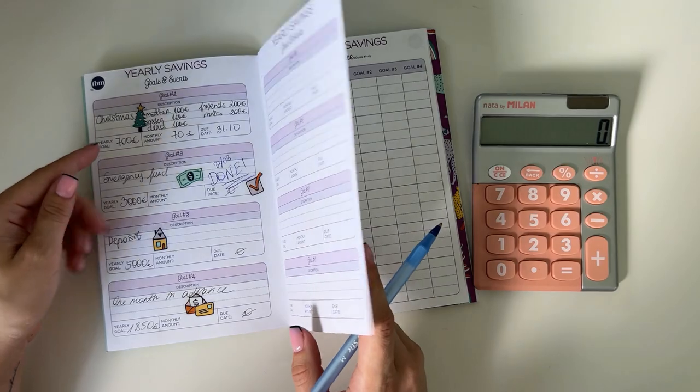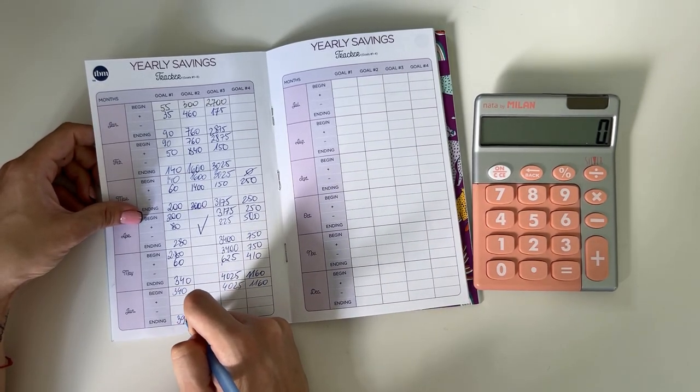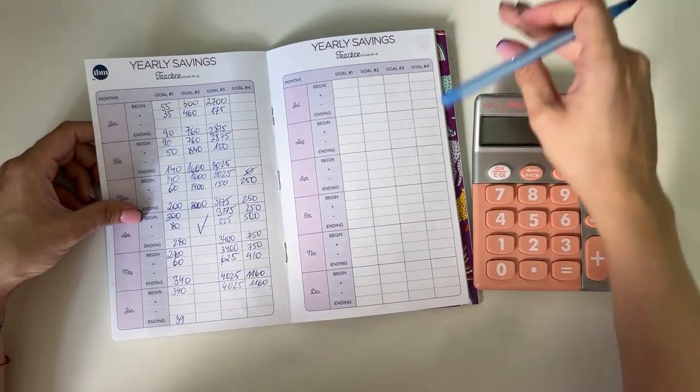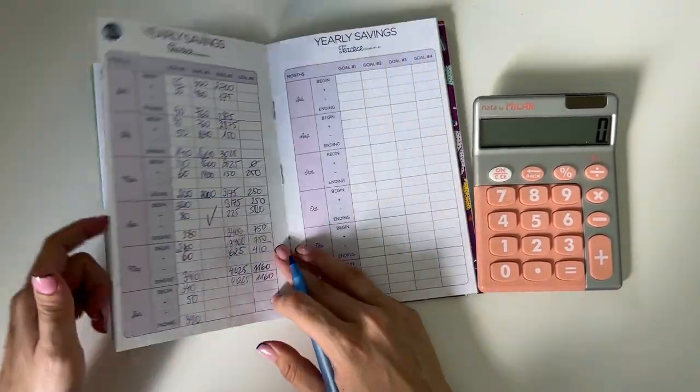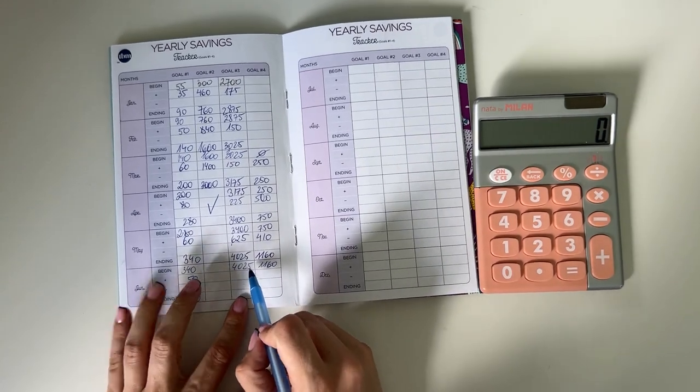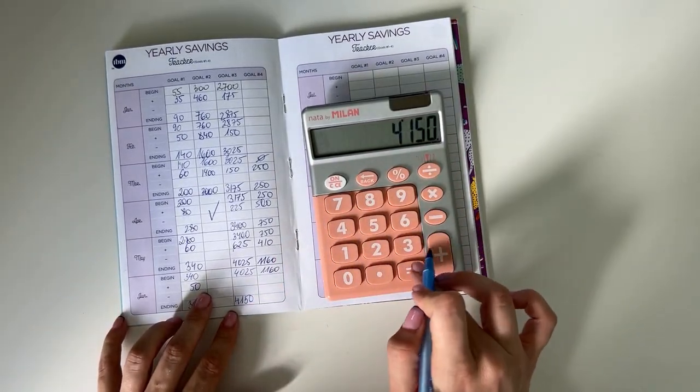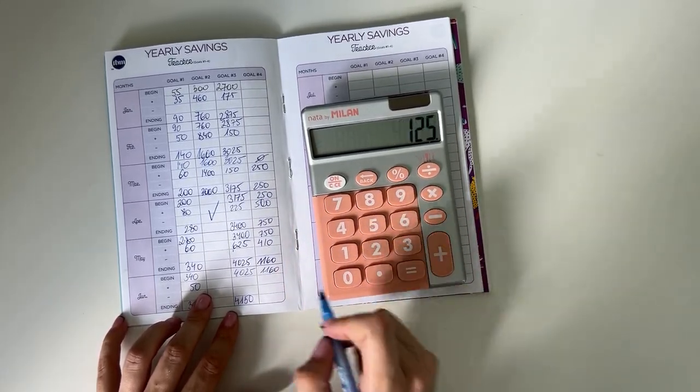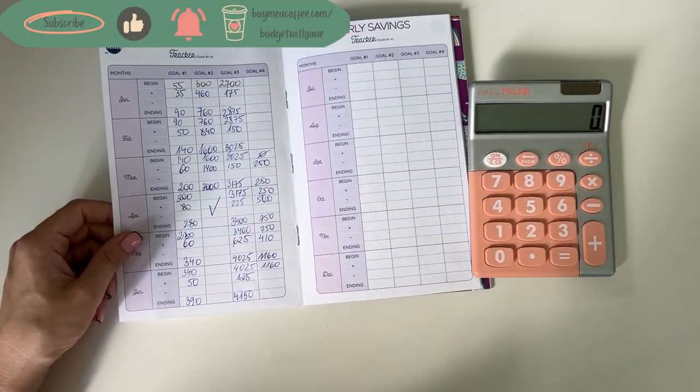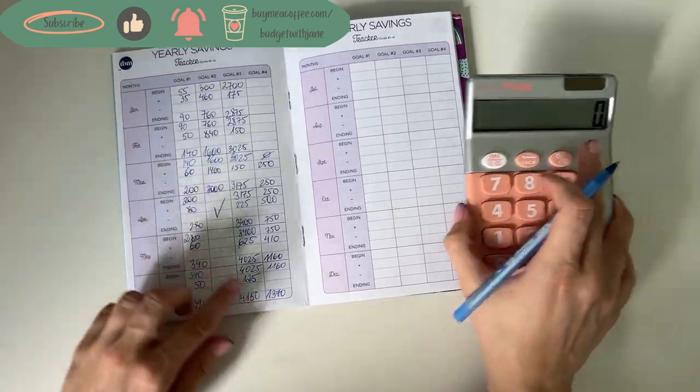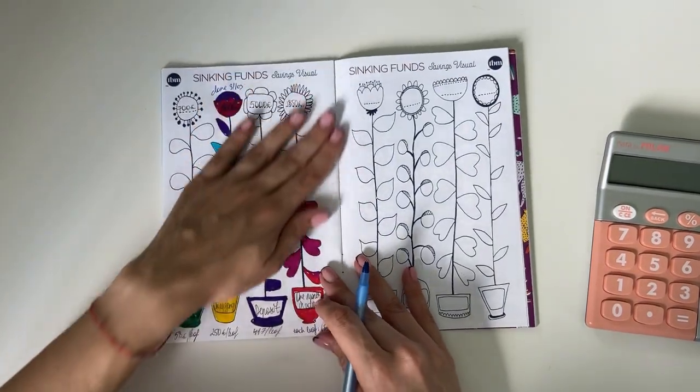Let's quickly go through our savings goals. Our savings: we have a goal of saving 700 for Christmas until the 31st of October. At the beginning of the month we had 340 there, and now we have 390 in Christmas, which means we added 50 euros. Our third goal is deposit, to have 5,000 there. At the beginning of the month we had 4,025, and now we have 4,150. That means we added 125.